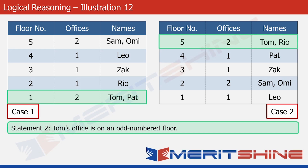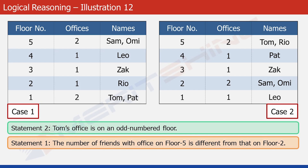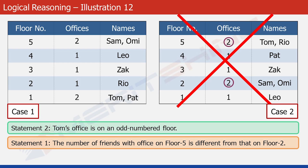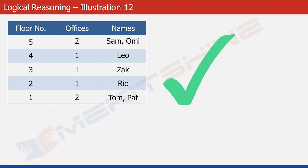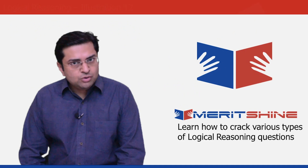Only one of these cases can be correct. We'll figure that out with statement 1, which states that the number of friends with an office on floor 5 is different from that on floor 2. In case 2, there are two offices on floor 5 and two offices on floor 2 — this violates the condition. So case 2 is not possible, and the arrangement in case 1 is correct. That becomes our answer to the question. We could handle it quite comfortably. That's how we deal with all such problems.